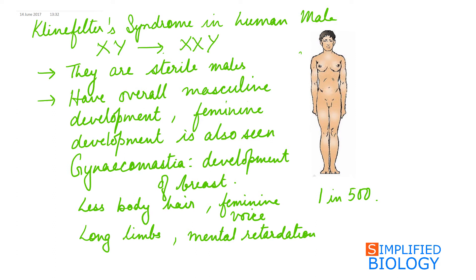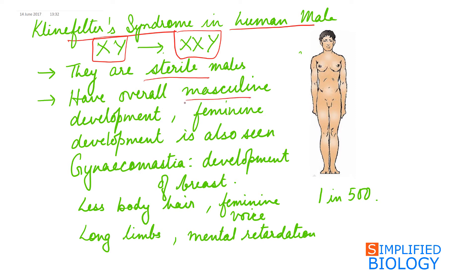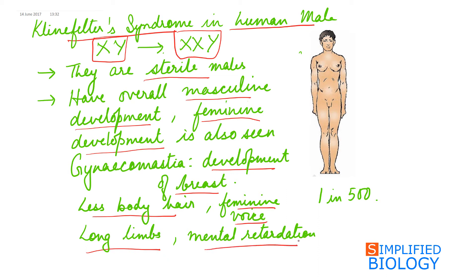Another example of trisomy is Klinefelter syndrome in human males. Normal males have an X and a Y chromosome, but in this case they have two X chromosomes and one Y chromosome. These males are sterile. They appear masculine but have feminine development, including breast development known as gynecomastia, less body hair, a feminine voice, long limbs, and mental retardation. Klinefelter syndrome is seen in approximately 1 in 500 males.